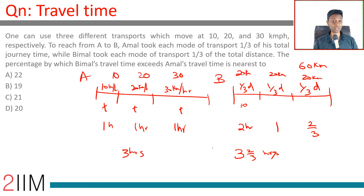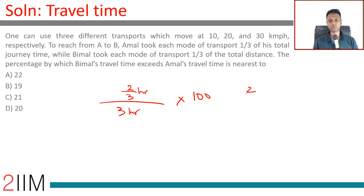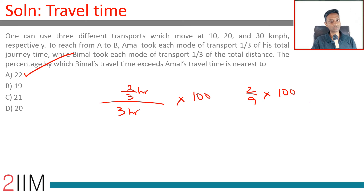The extra time is 2/3 of an hour. The percentage by which Bimal's travel time exceeds Amal's is calculated as: (2/3) divided by 3, multiplied by 100, which equals 2/9 × 100, approximately 22 percent. So 22 percent is the answer.